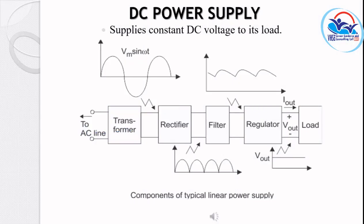The block diagram of a regulated DC power supply is shown in the diagram. Its main sections are: transformer, rectifier, filter, and voltage regulator. Let us understand each section in detail.